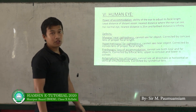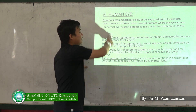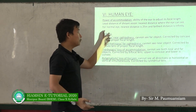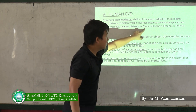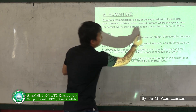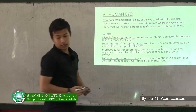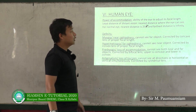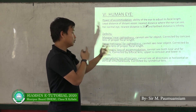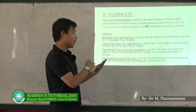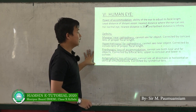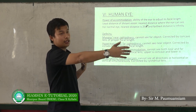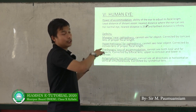A normal eye can see from the least distance of clear vision, which is 25 cm, up to the farthest distance, which is infinity. These represent the near point and the far point of a normal human eye.